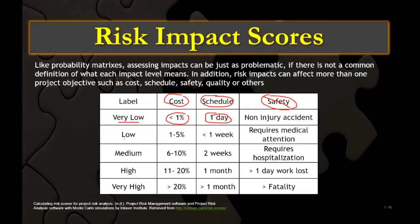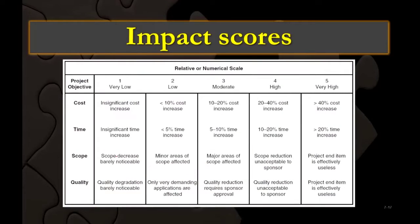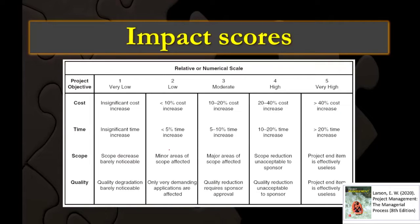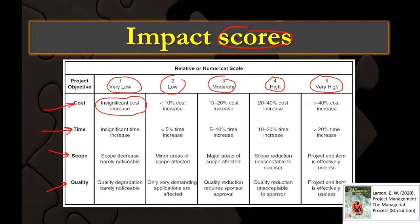For impact, we always create levels and give numerical scales: 1, 2, 3, 4, 5. There are numeric scales, and you can find that table in the book — this table is also in the PMBOK. We create a score for the impact: 1 for very low impact, 2 for low impact, 3 for moderate impact, 4 for high impact, and 5 for very high impact. We have four dimensions: cost, time, scope, and quality. For cost, we talk about cost increase. If it's insignificant or less than 1%, the impact is very low. Cost increases of 10–20%, 20–40%, and more than 40% move up the scale from low, moderate, to high, to very high.